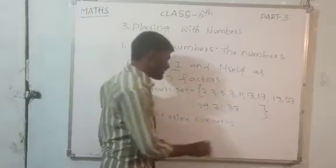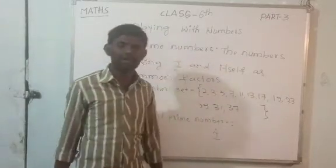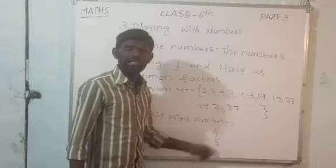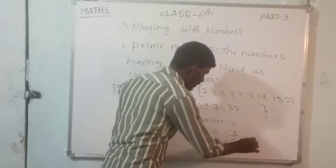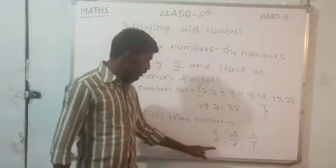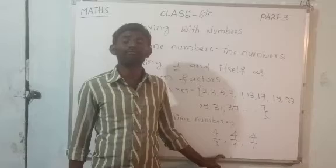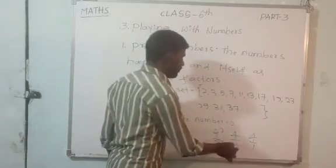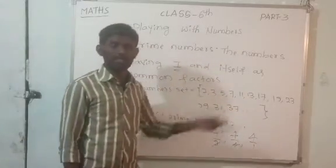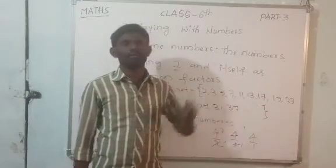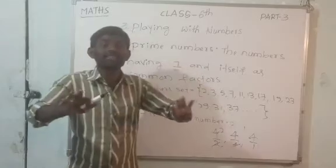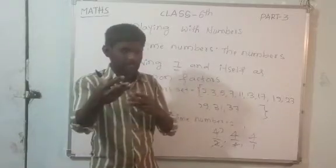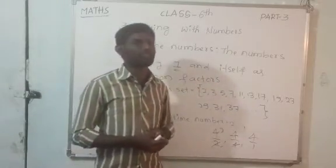Here, 4 — I didn't write it in the prime numbers set. You can ask: is 4 a Prime Number? No, because 4 is divisible by 2, divisible by 4, and divisible by 1. So 4 has 3 factors: 1, 2, and 4. That is why 4 is not a Prime Number — 4 is an Even Number and a Composite Number. I will explain Composite Numbers when I come to that topic.